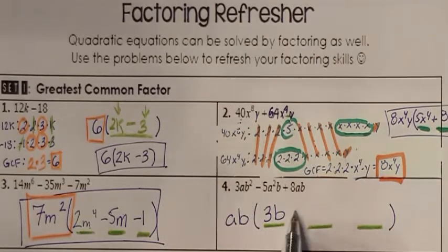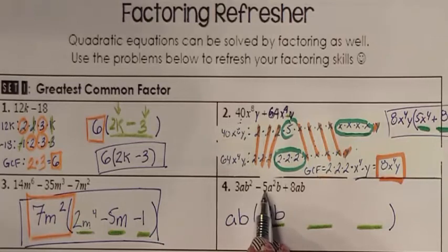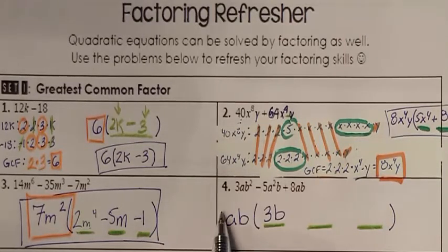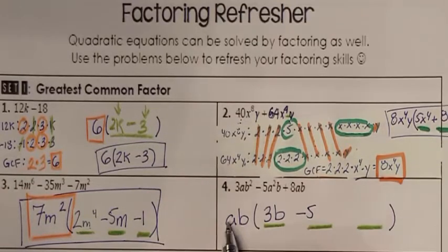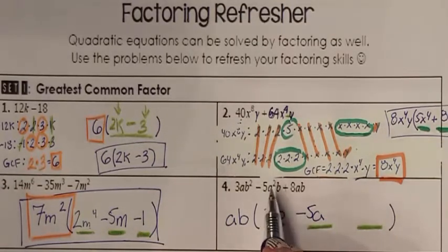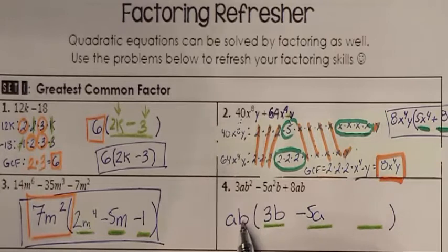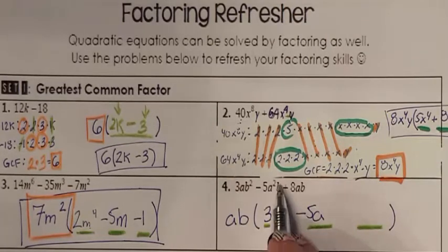A, B times what is going to give me a minus five A squared B. Well, this one times the minus five would give me the minus five. A times another A would have given me the A squared. B is already here. Multiply it by one, you got the B.